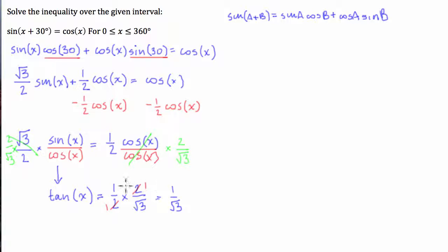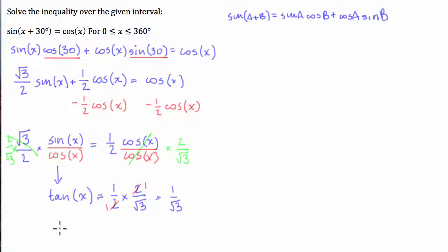With our exact values, we know that the value of x which makes tan of x equal to 1 over root 3 is x equal to 30 degrees.